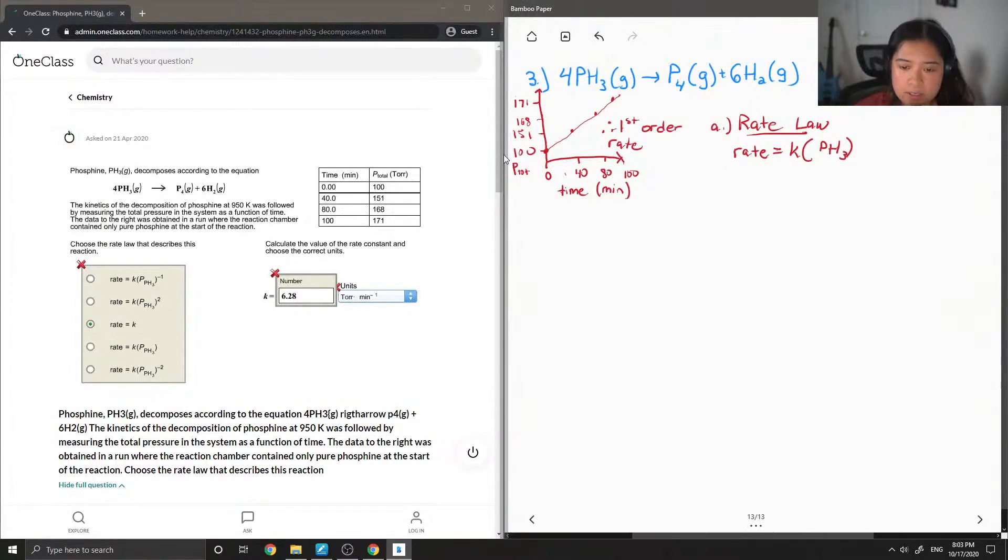Okay, so we can see that the more phosphine we have, the higher pressure that we have goes up as time increases as well. So it goes up in a straight line.